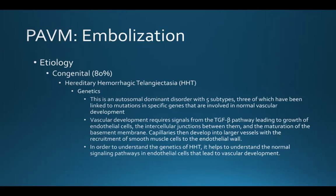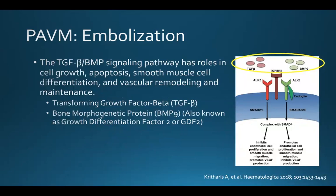Capillaries then develop into larger vessels with the recruitment of smooth muscle cells to the endothelial wall. To understand the genetics of HHT, it helps to understand the normal signaling pathways in endothelial cells that lead to vascular development. TGF-beta, or transforming growth factor beta, and BMP9, or bone morphogenetic protein 9, begin this signaling pathway, which is responsible for cell growth, apoptosis, smooth muscle cell differentiation, and vascular remodeling and maintenance.